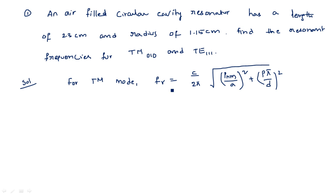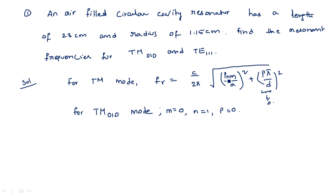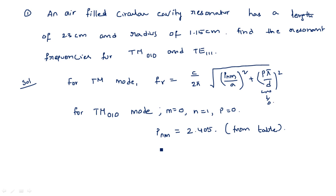For TM010 mode, m = 0, n = 1, and p = 0. Since p = 0, the (pπ/D) term becomes zero, leaving only the P_nm / A term. For m = 0 and n = 1, the value P_nm = 2.405, which is taken from the predetermined table.